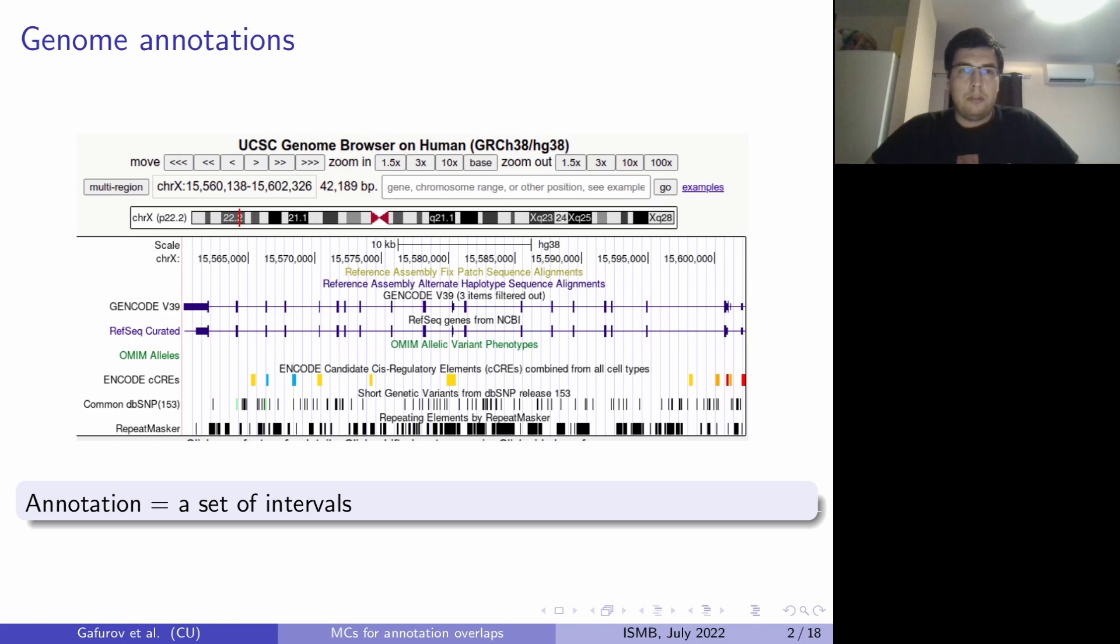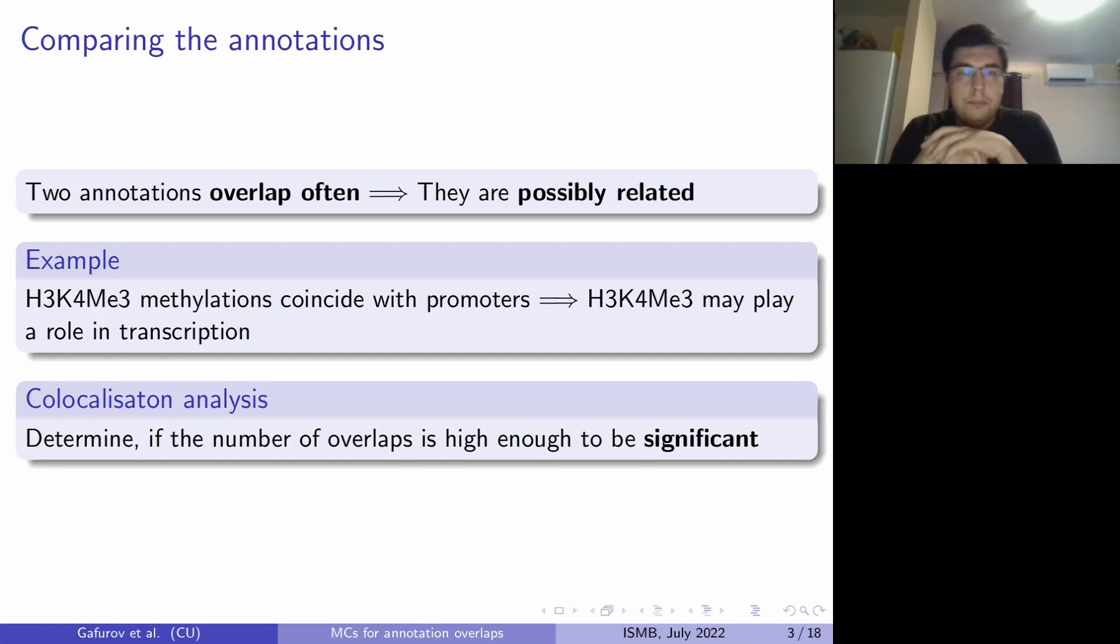Let's talk about genome annotations. Many types of genomic features such as genes, regulatory elements or epigenetic modifications are commonly denoted as genomic annotations. We can see the annotation as just a set of intervals in a genome. In order to study them, we often have to compare them and if we see that two annotations overlap often, that could mean that they are possibly somehow related.